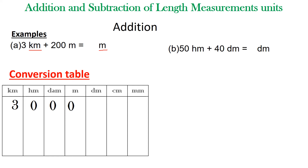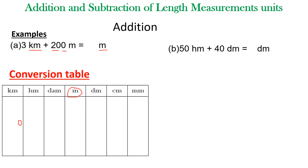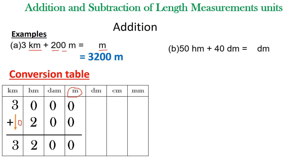We convert 3 kilometers to meters before adding. Fill in with zeros until you get to meters. When adding, arrange the digits vertically according to their place values. Zero plus zero is zero, zero plus zero is zero, zero plus two is two, and three is brought down. The answer is 3,200 meters.